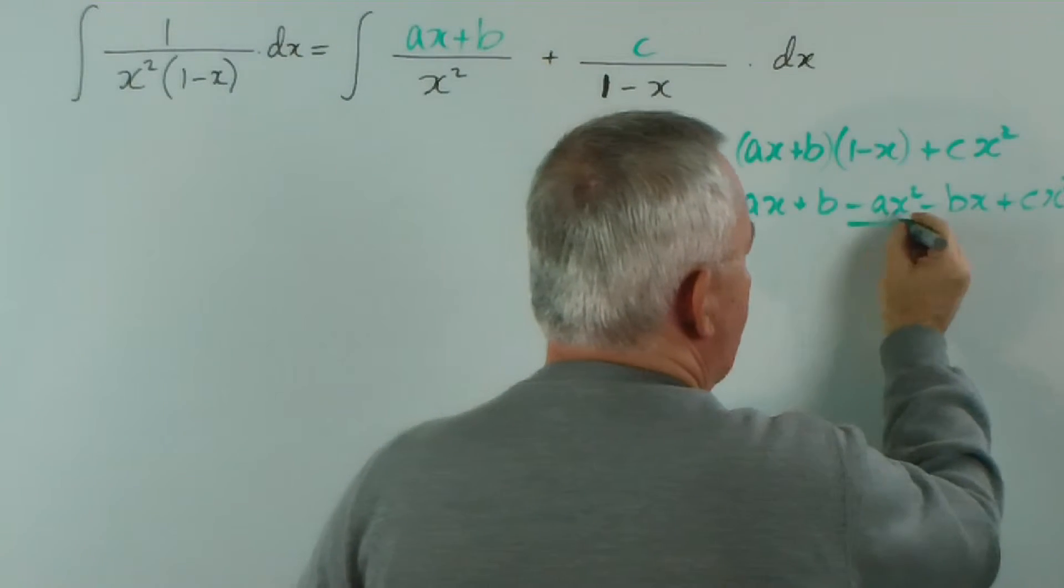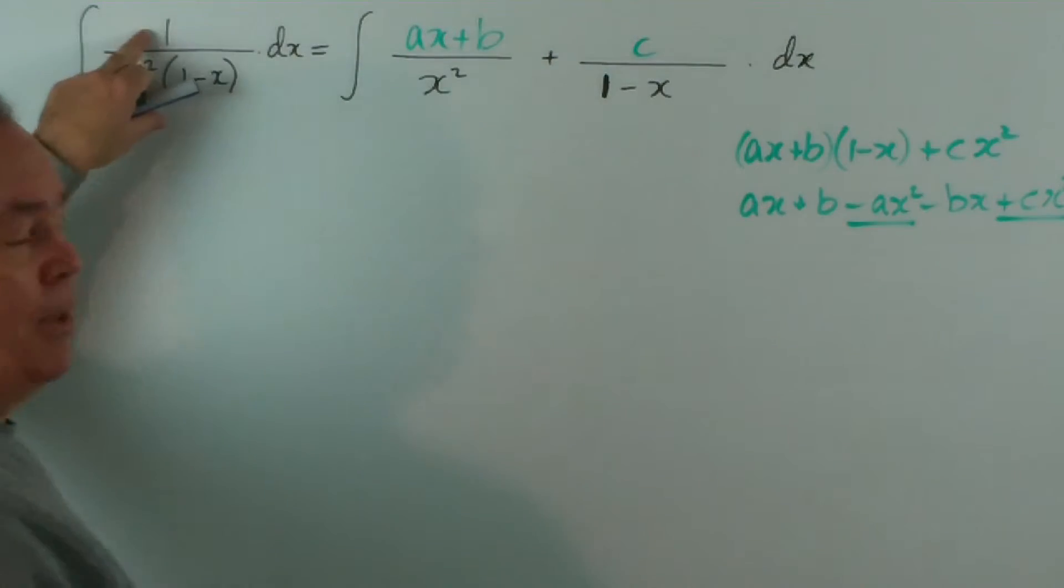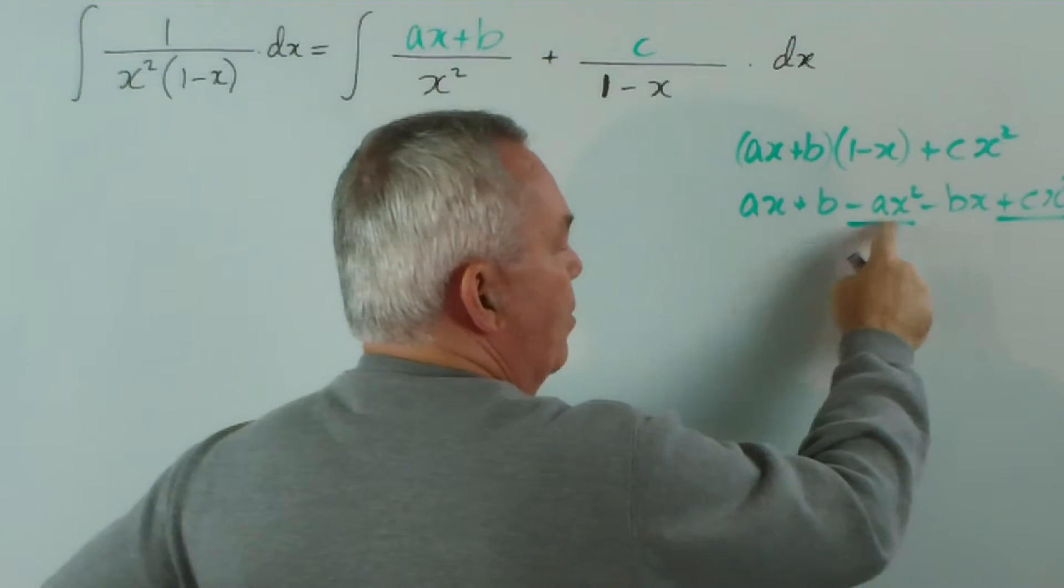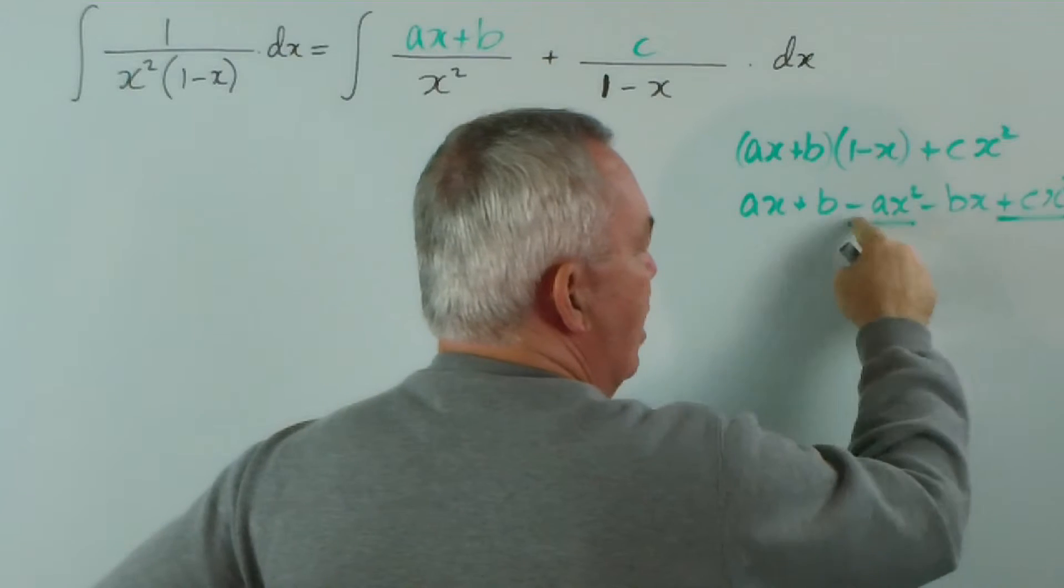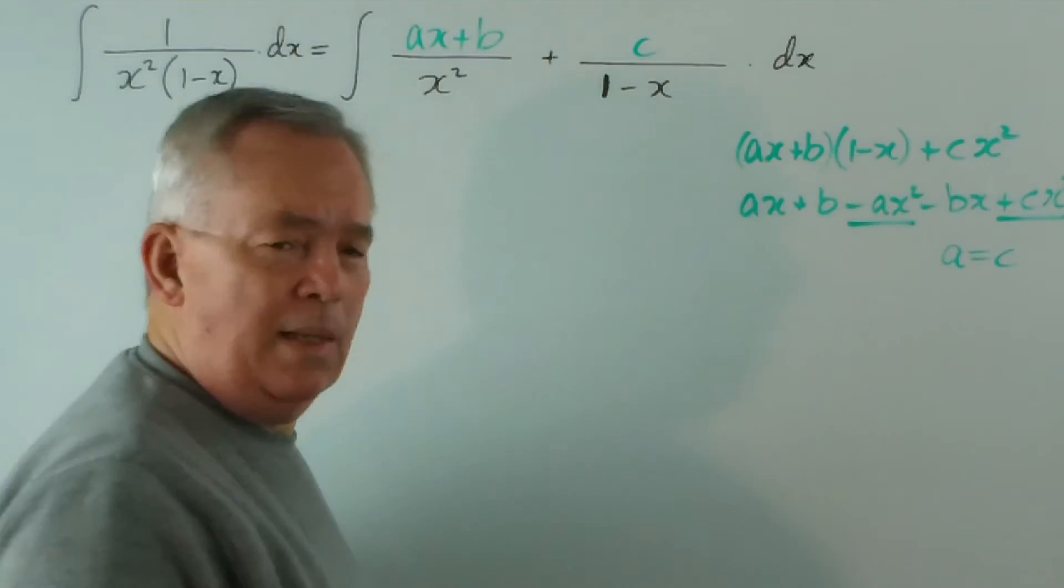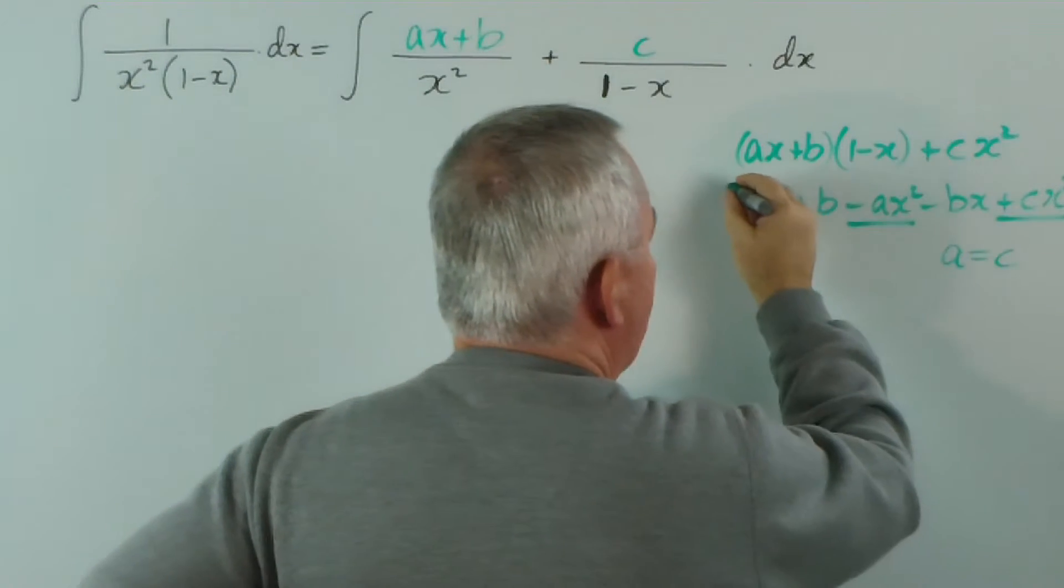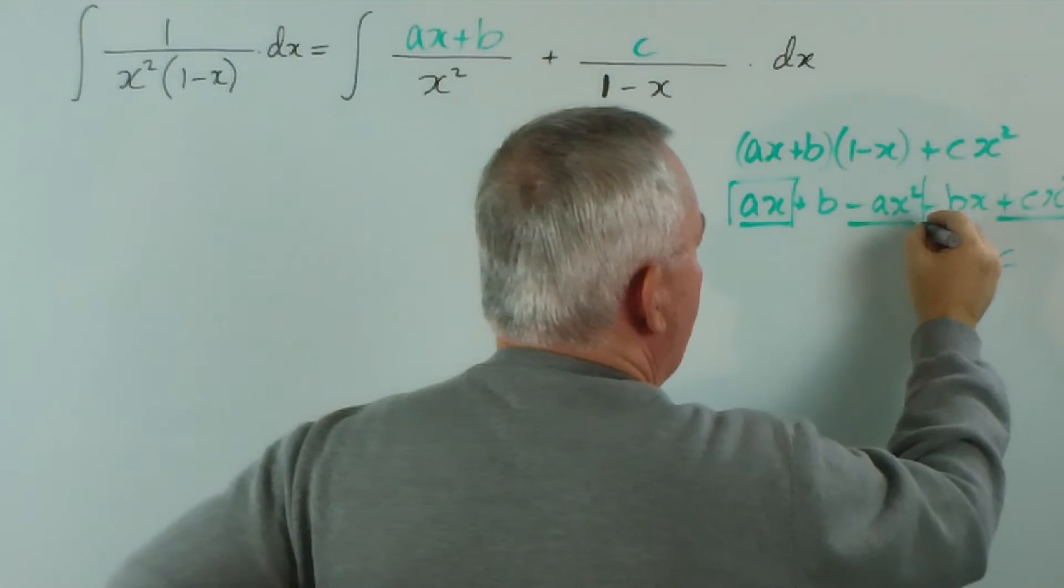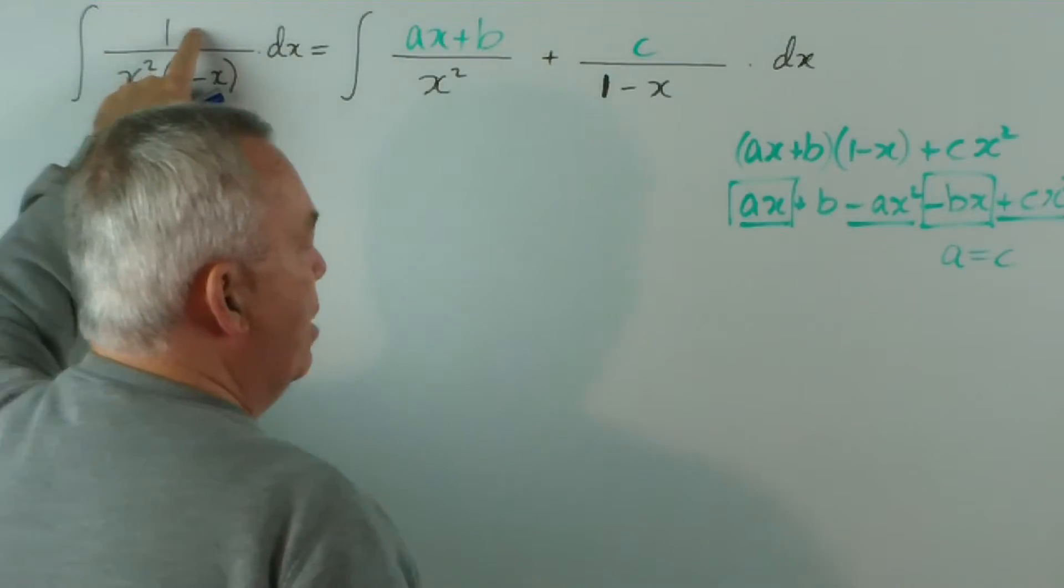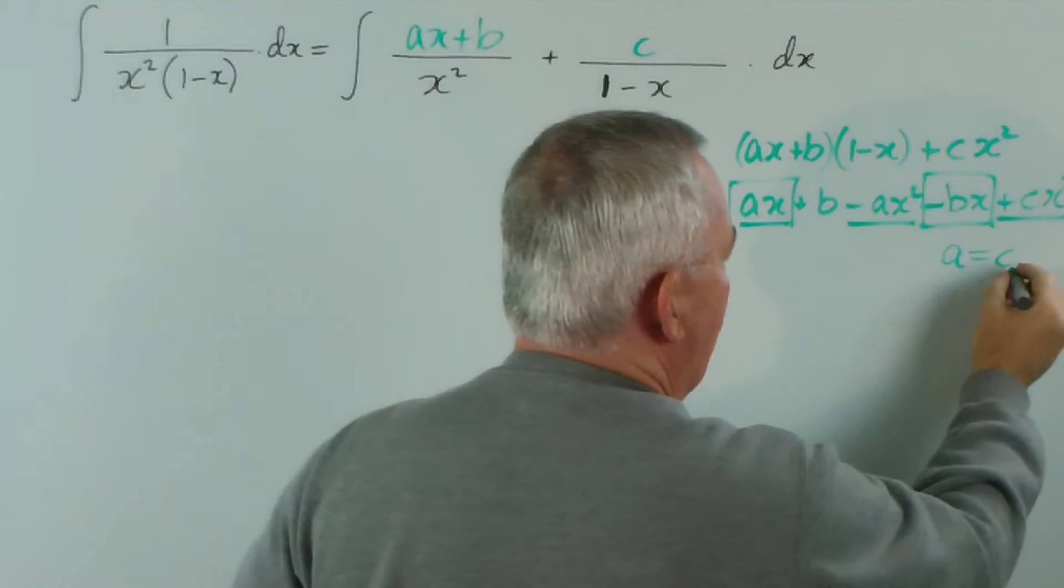Now, just by inspecting this, we can see we have two x squared terms and there is no x squared term there. So these must add up to zero. In other words, c and a must equal each other. That's enough for us to know at this point. Looking at the x terms... again, there's no x term here. So, a minus b times x must be zero, so a must equal b.